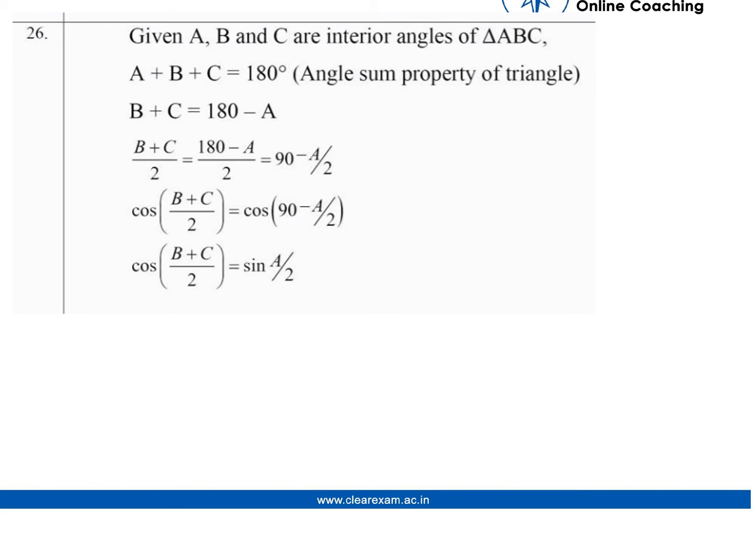Since A, B, and C are interior angles of triangle ABC, by the angle sum property of a triangle we can write A+B+C = 180 degrees. Now move this A to the right hand side, so we can write B+C = 180-A.